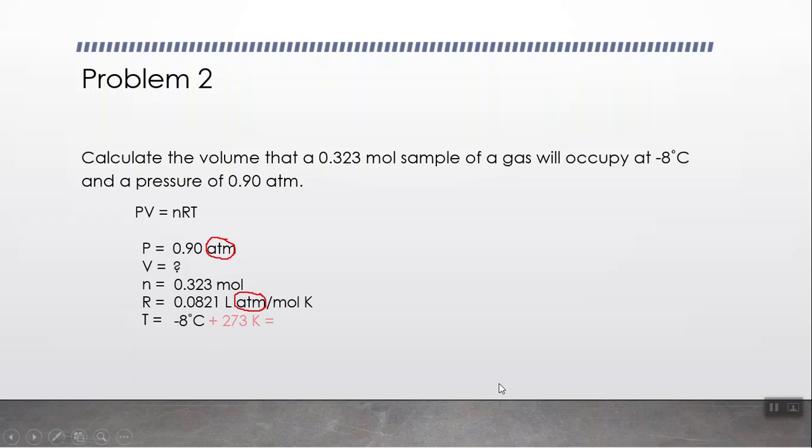We're solving for volume. For temperature, make sure you convert before you move on because we are given Celsius. Negative 8 degrees Celsius plus 273 equals 265 Kelvin. If you don't convert the temperature right now and decide to do it later, you're not going to get the same answer. Make sure you convert all your units prior to setting it up and solving. Solving for V, we get an answer of 7.8 liters.